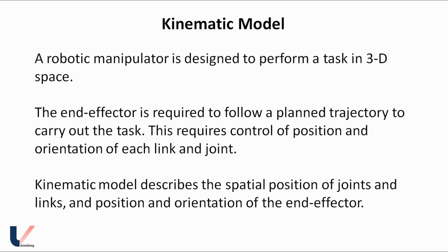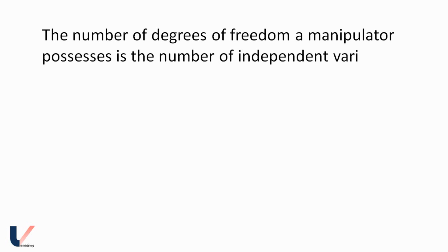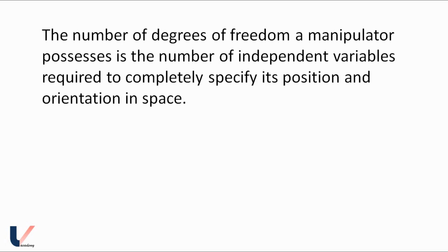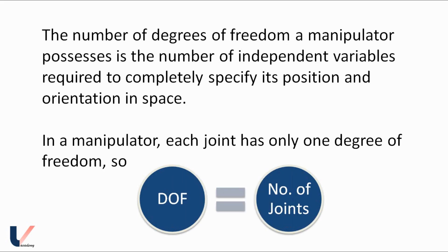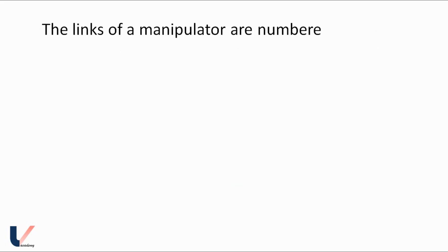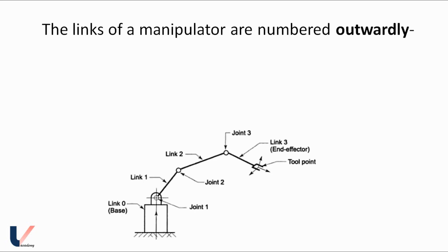A kinematic model describes the spatial position of joints and links, and the position and orientation of the end effector. We have already studied that the number of degrees of freedom a manipulator possesses is the number of independent variables required to completely specify its position and orientation in space. In a manipulator, each joint has only one degree of freedom, so the degrees of freedom equals the number of joints.